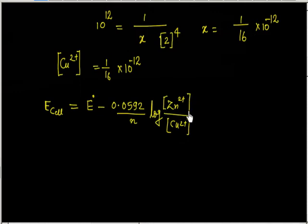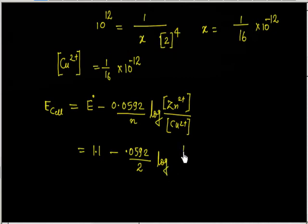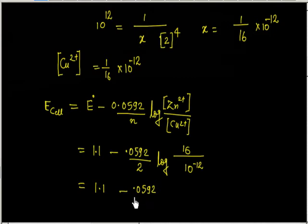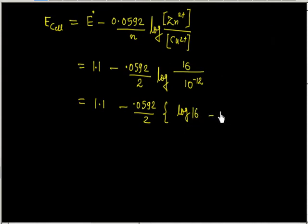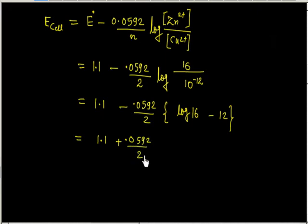Substituting values: [Zn²⁺] = 1M, E° = 1.1 volt, N = 2 (number of electrons), and [Cu²⁺] = 1/(16 × 10¹²). So log([Zn²⁺]/[Cu²⁺]) becomes log(16 × 10¹²), which equals log 16 + 12. Applying log rules, this gives log 16 minus (−12), and taking the minus sign in gives us 1.1 plus 0.0592/2 × (12 − log 16).